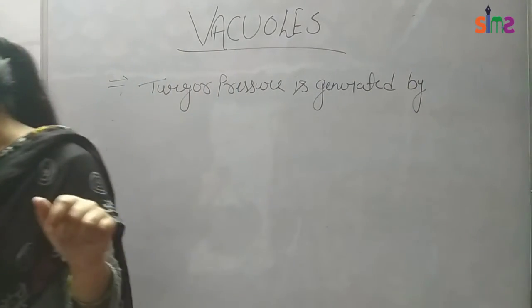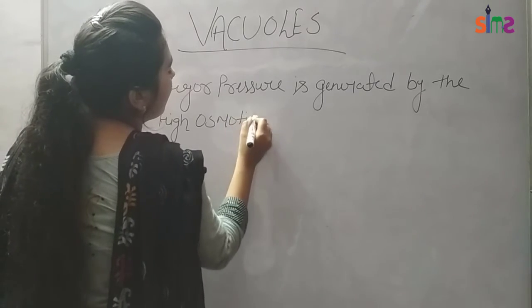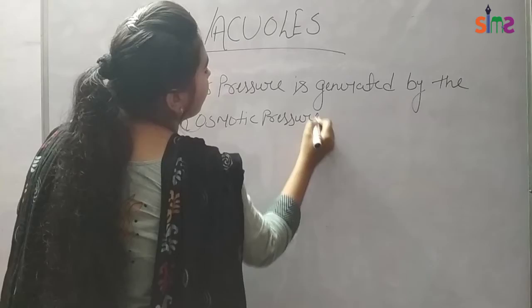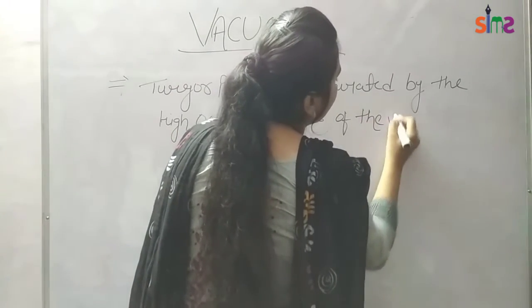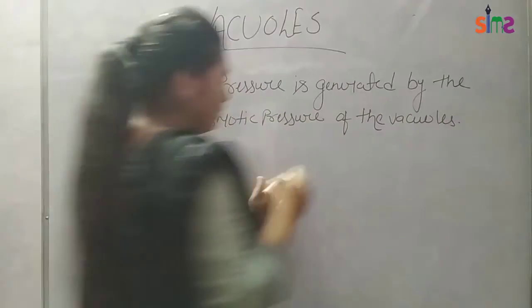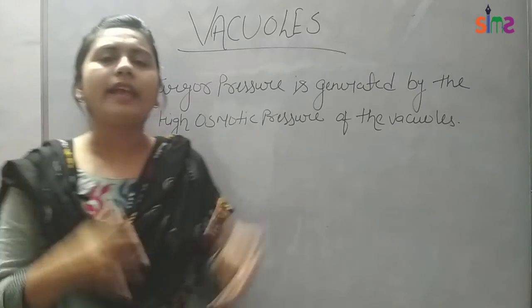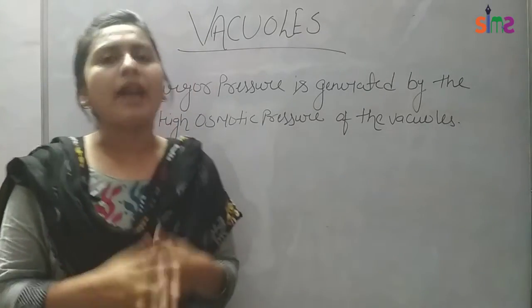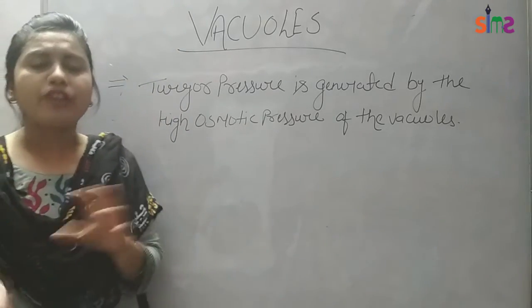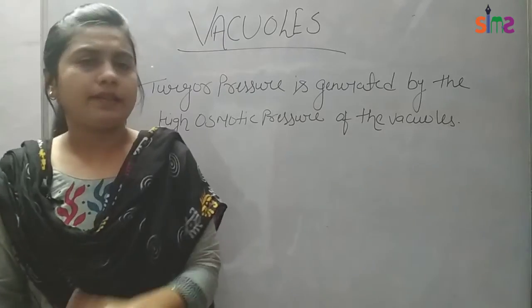The pressure generated by the high osmotic pressure inside the vacuole is important. The high osmotic pressure of the centrally located vacuole — surrounded by the tonoplast — plays a key role in maintaining cell turgor in plant cells.